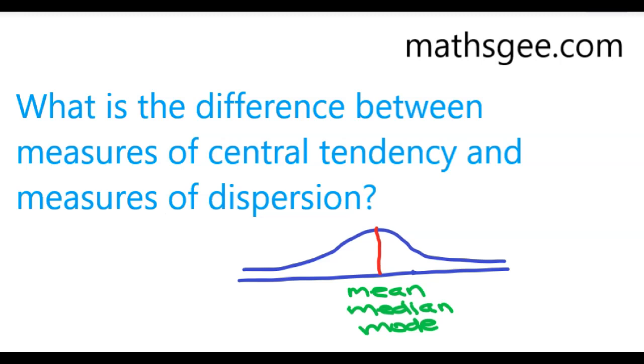So, the mean, median, and mode are the measures of central tendency and they're averages.